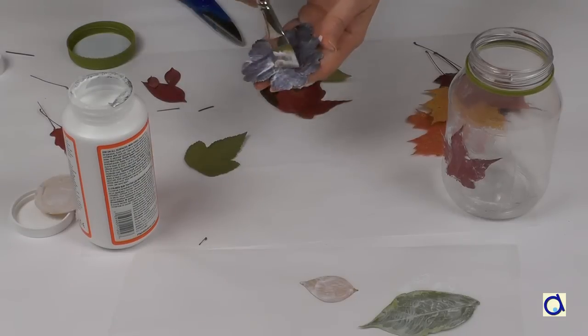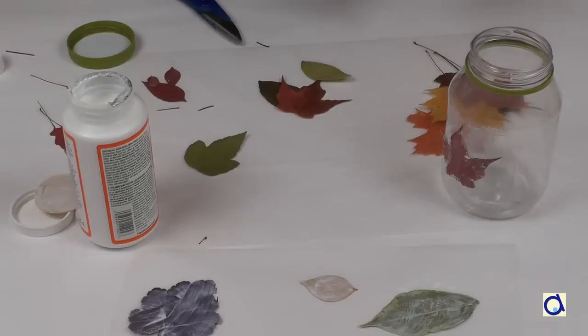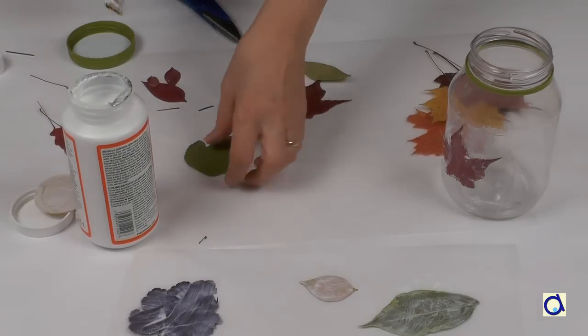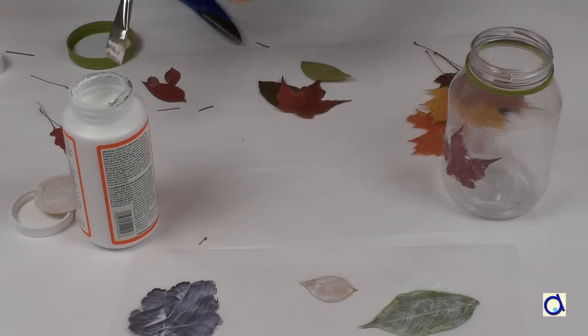Proceed with caution because dried leaves are fragile. The mod podge will help rehydrate them and make them more flexible.